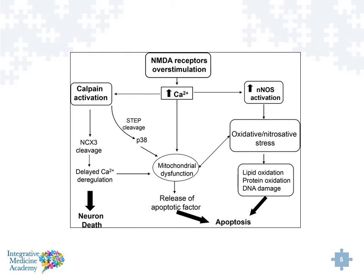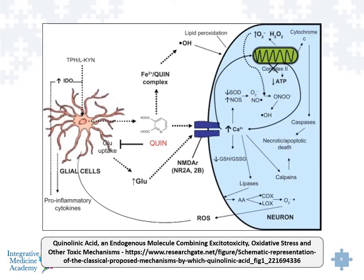Quinolinic acid can stimulate receptors in our brain called NMDA receptors. NMDA receptors are well-known in Alzheimer's disease because increased NMDA receptor activity can lead to neuron degeneration, and certain medications help regulate this activity. When the NMDA receptor is activated, there is an influx of calcium into the nerve cell, which triggers a series of reactions. One consequence is oxidative stress, which can damage lipids, proteins, or DNA, and directly damage mitochondria — all of this potentially leading to apoptosis, or cell death.